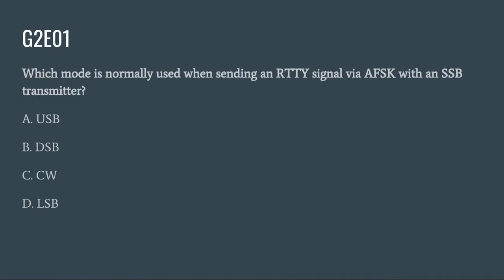G2E01: Which mode is normally used when sending an RTTY signal via AFSK with a SSB transmitter? A. USB. B. DSB. C. CW. Or D. LSB. The correct answer is D: lower sideband, LSB.